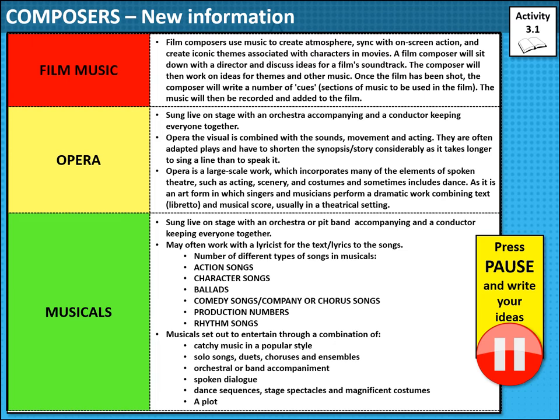Musicals are very similar to opera and there are some crossovers. If you are still struggling, I'd recommend going back to watch some of the videos I've done for year seven on musicals. Musicals are sung live on stage with an orchestra or pit band accompanying and a conductor to keep everybody together. The reason I say 'or a pit band' is because it depends on what instruments are being used. If it's a rock musical — like We Will Rock You — there are many more electronic instruments, a lot of guitars and heavy percussion. But if you think of something like Les Misérables, they often have a very orchestral setup with strings, harps, French horns, trombones, trumpets, and woodwind.